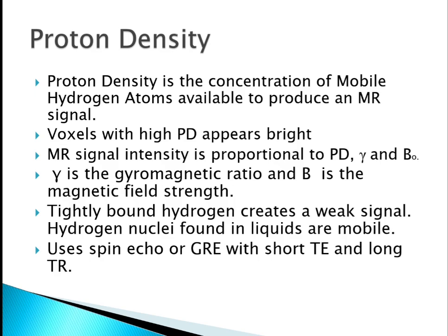If you want to learn more about pulse sequences, I have made a video on MRI pulse sequences — the link is in the description box. TE means time to echo and TR means repetition time. For proton density weighted imaging we use spin echo sequence or gradient echo sequence with short TE and long TR.